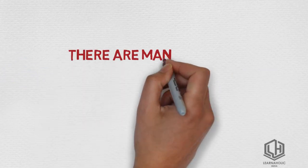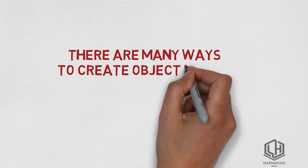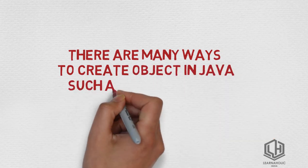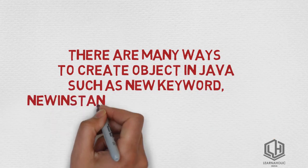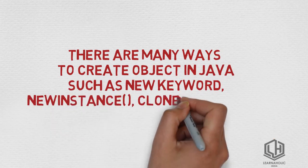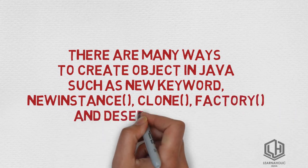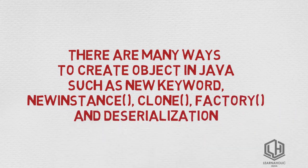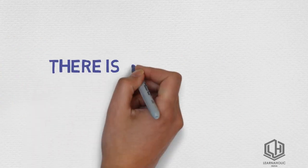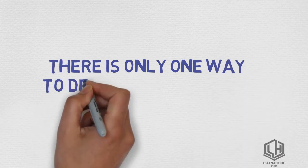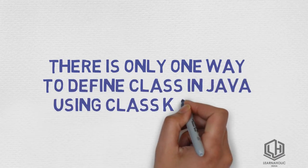Seventh: there are many ways to create an object in Java, such as new keyword, newInstance() method, clone() method, factory method, and deserialization. Whereas there is only one way to define a class in Java — using the class keyword.